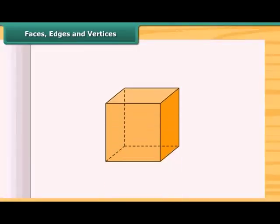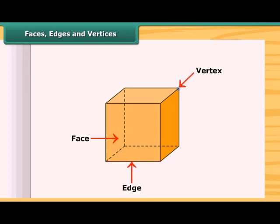Look at this cube. This is the face of a cube, this is the edge of the cube, and this is the vertex of the cube. An edge is a line segment where the faces meet, and the vertices are the points where the edges meet.